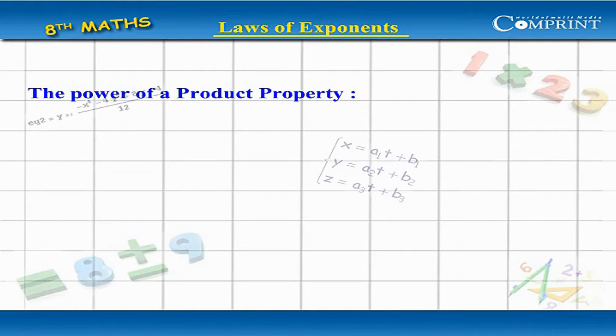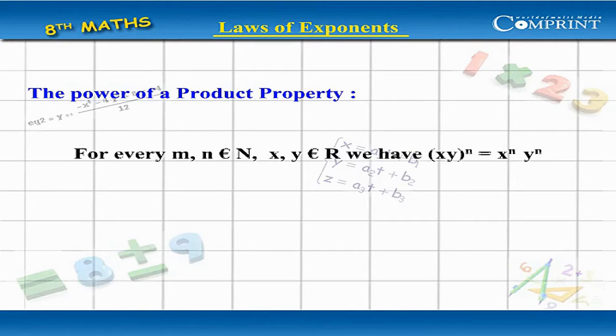The Power of a Product Property: for every n belonging to capital N and x, y belonging to R, we have xy whole to the power n equal to x to the power n times y to the power n.